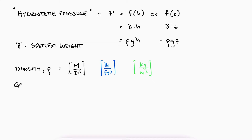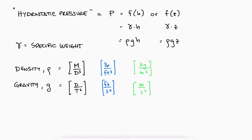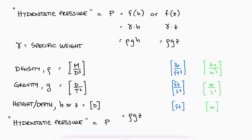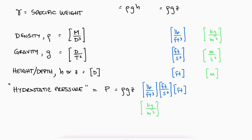The gravity g is an acceleration, which is distance over time squared — for example, meters per second squared — and since the height or depth is distance, for example meters, we find that the pressure has units of pascals for metric, or psi for English units.